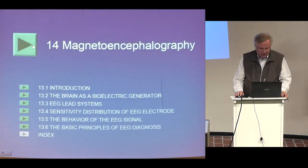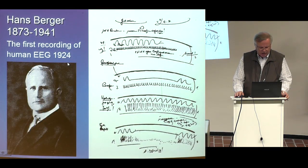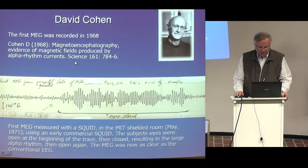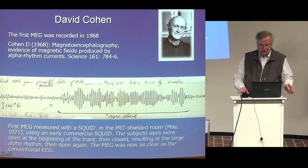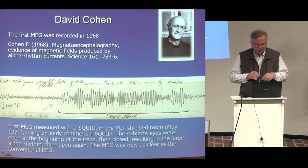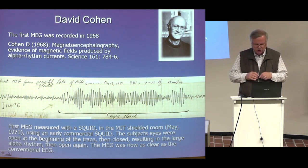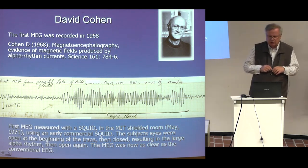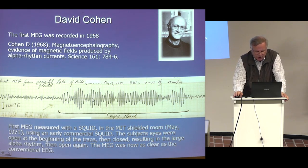That's about EEG. Now I go to magnetoencephalography. I start again with Hans Berger, who measured the first recording of EEG in 1924. The first recording of MEG — the magnetic signal from the electric activity of the brain — was made in 1968 by David Cohen from MIT. He used first room-temperature coils. Measurements are much better done with SQUIDs — superconducting quantum interference devices. Here is a very good signal quality of alpha rhythm taken with a SQUID detector in May 1971.